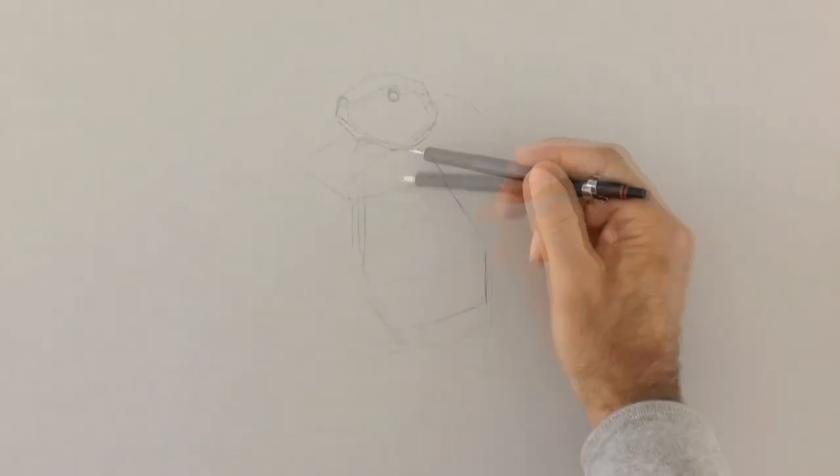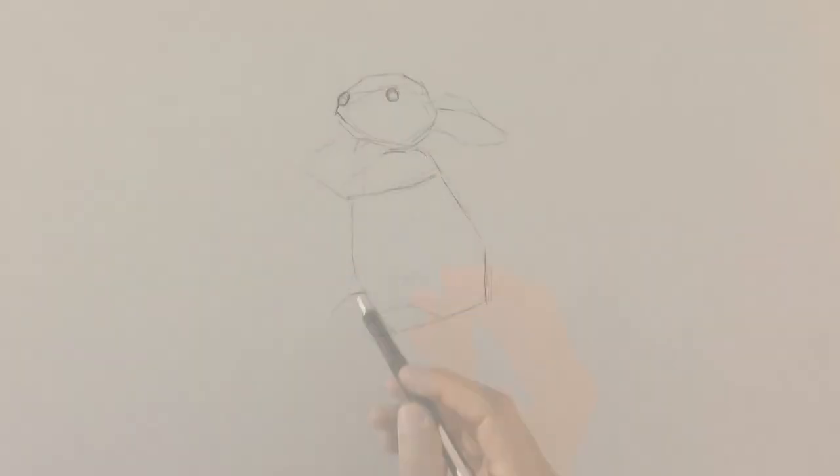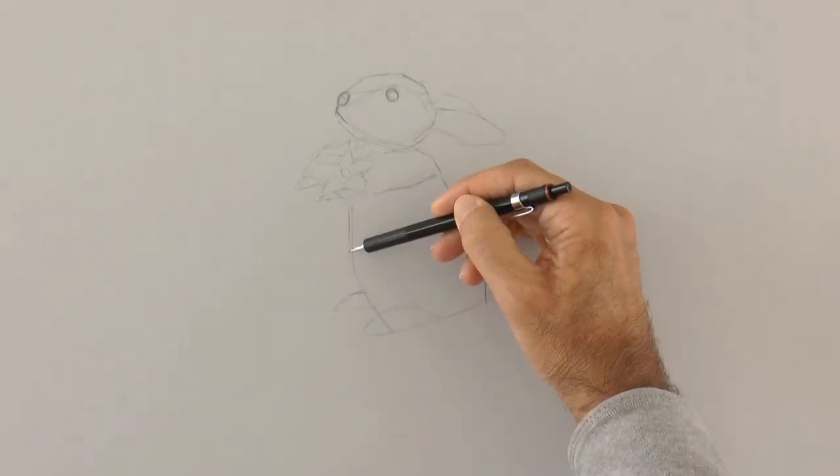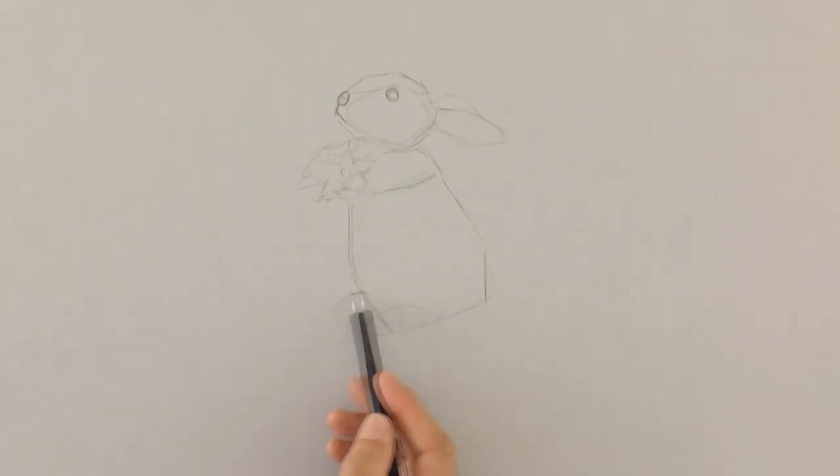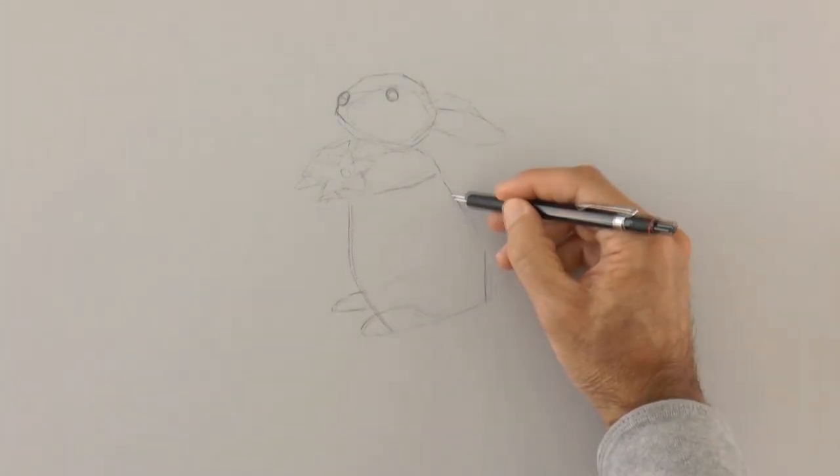I shorten the body as it was too long. The feet, the ears and we go over the lines that we just drew and we keep correcting as needed. For example here as the rabbit looks too fat.